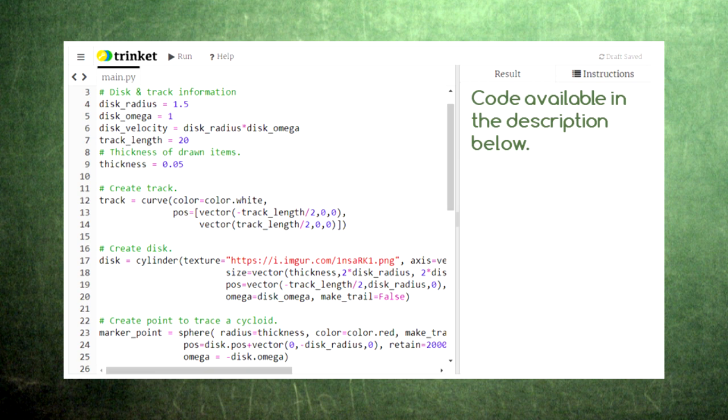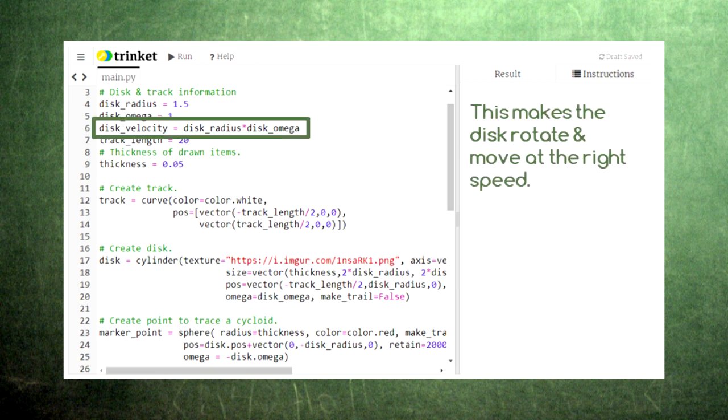In this code, we set up a disc to move along a track. Here we use the relationship between linear velocity and rotational velocity to keep the disc moving forward at an appropriate speed.